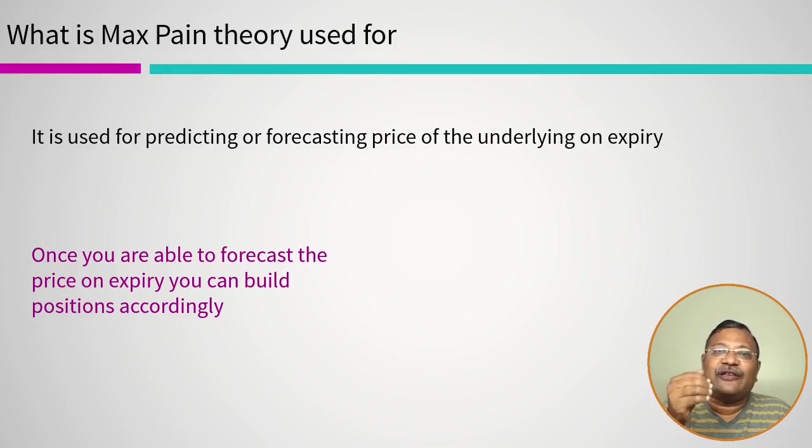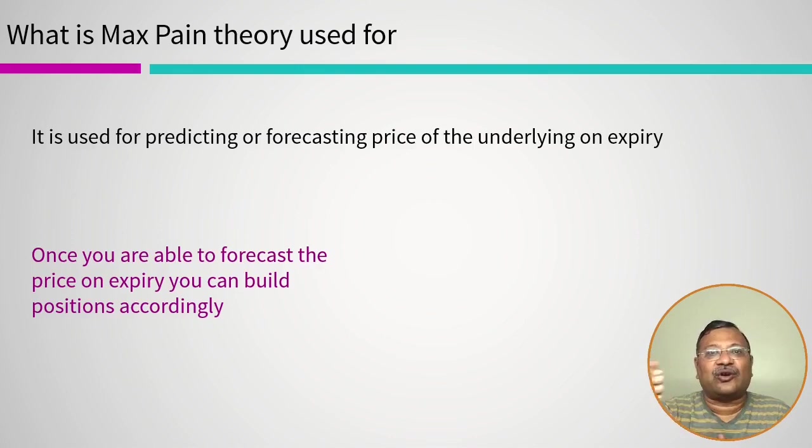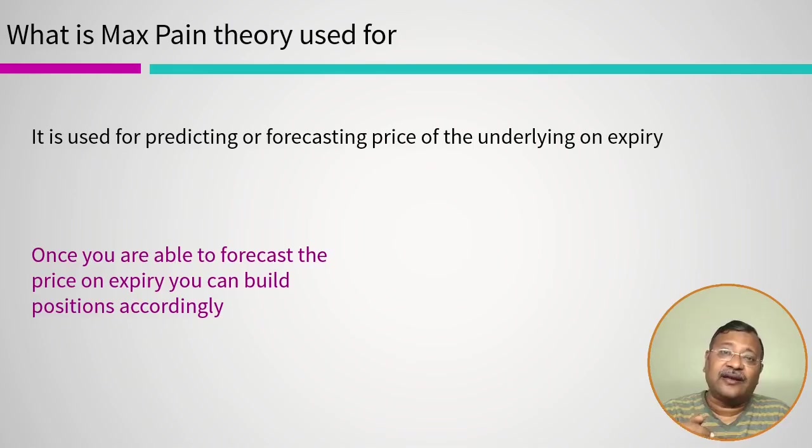For example, if I know that Nifty is going to expire at 12,600 levels, then maybe I can buy the 12,400 call or 12,500 call which right now may be available at quite cheap levels. So this is used for predicting or forecasting the price of the underlying on expiry.